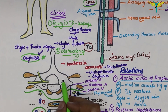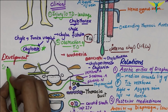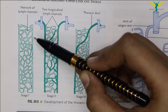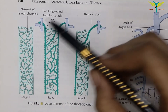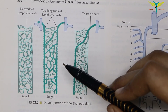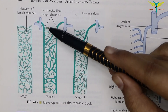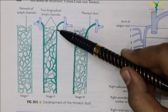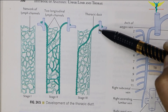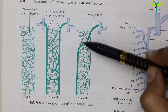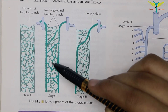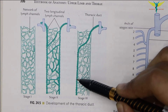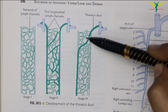The thoracic duct develops in three stages. In stage one, a network of lymph channels forms in front of the thoracic part of the vertebral column. In stage two, two longitudinal lymph channels appear — one on the left side and one on the right side — with numerous cross communications between them. In stage three, the cross communications appear opposite to T5 vertebra. The right longitudinal channel below this cross communication and the left longitudinal channel above it persist to form the thoracic duct. All other parts from stage two disappear.